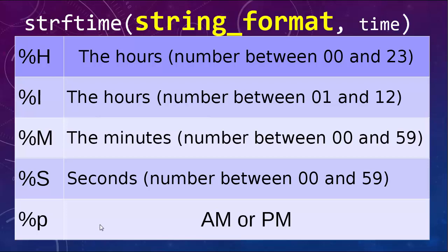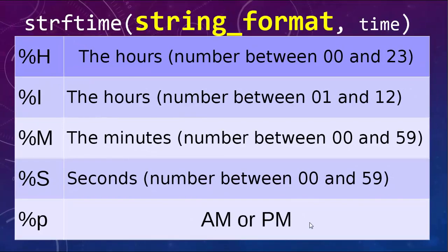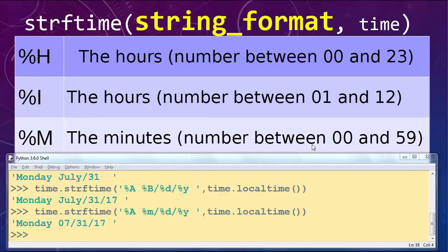Now I'll show you a few directives to get the current time. Directive %H gets us hours as a number between 0 and 23. If we want hours as a number between 1 and 12 we use directive %I. For minutes we use directive %M, which gives a number between 0 and 59. For seconds we use %S, also a number between 0 and 59. And with directive %p we can choose AM or PM time format.